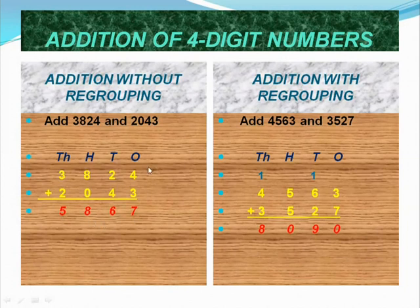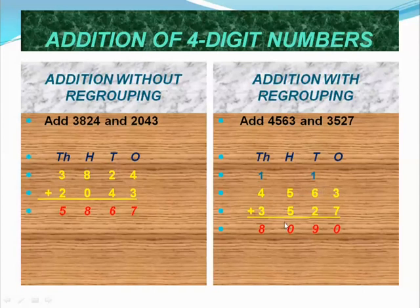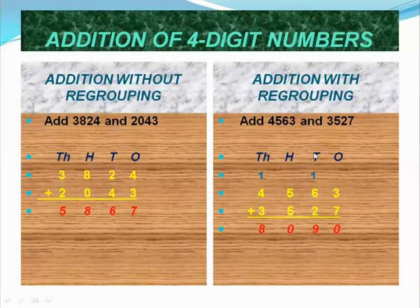This is addition without regrouping. Next, addition with regrouping. Add 4,563 and 3,527. Here also we write the numbers one below the other and add. First we add the ones place digit. In the ones place, 3 and 7 are there. 3 plus 7 equals 10. We write 0 in the ones place and carry 1 to the next tens place.